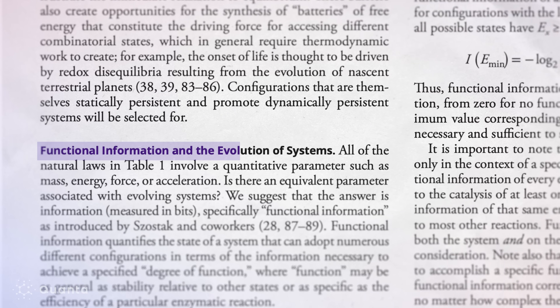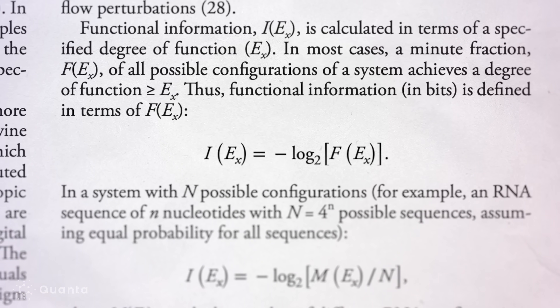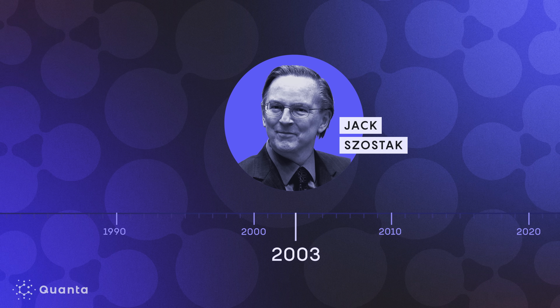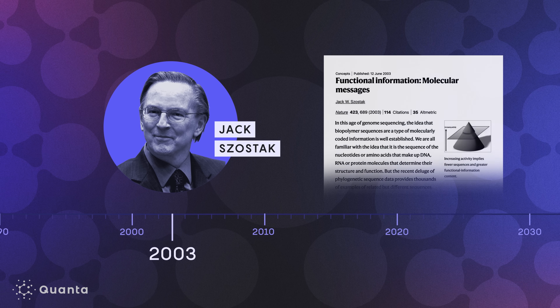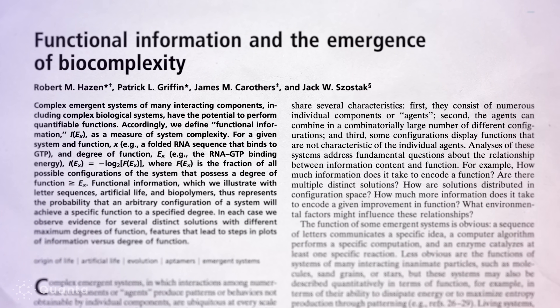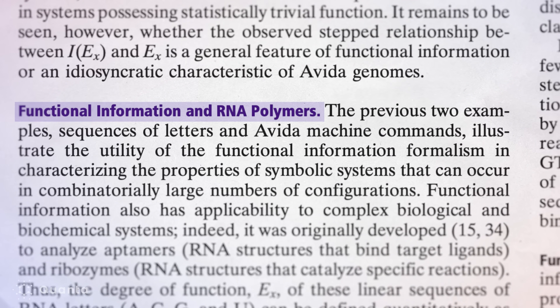We propose that over time a different kind of complexity, which we call functional information, actually increases over time for systems that are evolving. The metric functional information was first introduced by Nobel Prize winner Jack Shostak in 2003, thinking about the functionality of biological molecules. This was later applied to additional systems like artificial life and language. When we were thinking about what metric to use for a law of evolution that can apply to both biological and non-biological systems, we decided that functional information might be a useful metric.